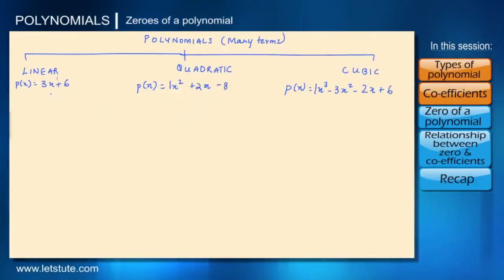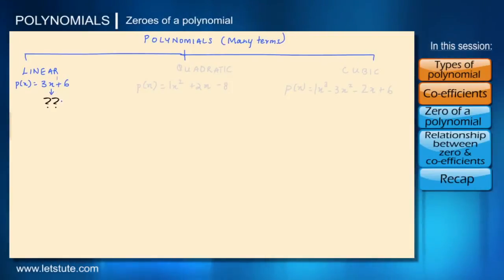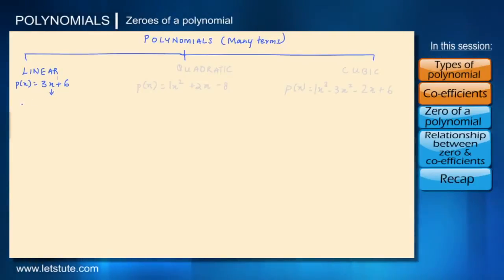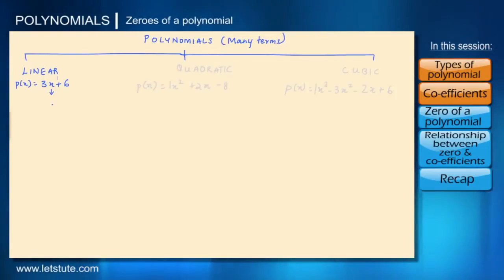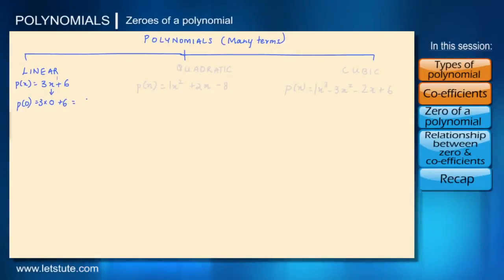Let's look at this linear polynomial. Everything here seems pretty sorted except for this value of x. We don't know what the value of x is. So I'm going to substitute some random numbers here in place of x to see how this polynomial is actually affected. Let's say x is equal to 0, then I will have p of 0 equal to 3 into 0 plus 6, which is equal to 6.